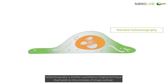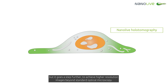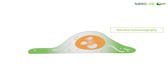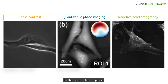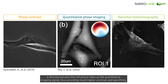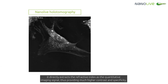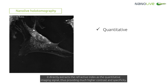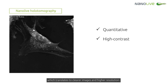Holotomography is another quantitative imaging technique that builds on the principles of phase contrast, but it goes a step further to achieve higher resolution images beyond standard optical microscopy. Furthermore, instead of phase, it directly extracts the refractive index as the quantitative imaging signal, thus providing much higher contrast and specificity, which translates to clearer images and higher resolution.